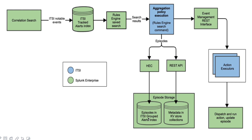The index for grouped episodes is itsi_underscore_grouped_underscore_alerts. So if you want to search for a specific grouped event or episode, you can find it in itsi_grouped_alerts. For notable events, the index is itsi_tracked_alert. Through HEC, the grouped events go to the grouped alert index.